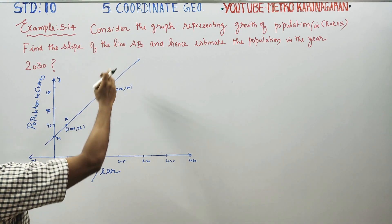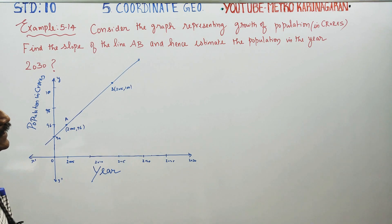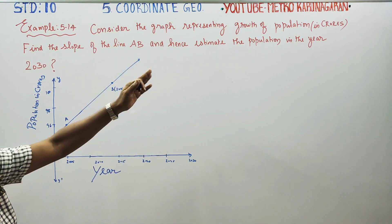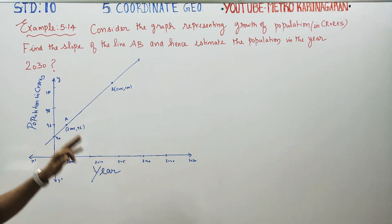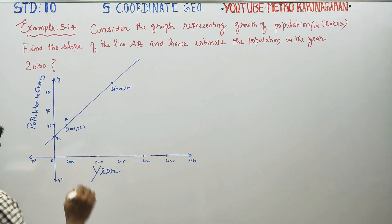AB slope is what we need to find, and we also need to estimate the population in the year 2030.